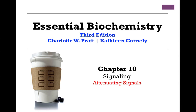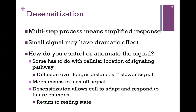We're continuing our studies in Chapter 10 on signaling, and in this lesson we want to look at how we can attenuate or limit a signal. In our last lesson, we looked at how the fight-or-flight response works. Bevo was after us, and we had to increase our heart action, increase dilation of our blood vessels and airways, and we also needed to improve our fuel allocation.